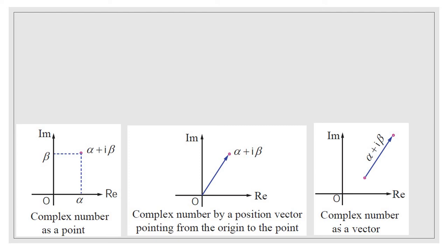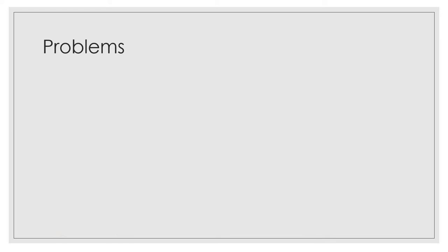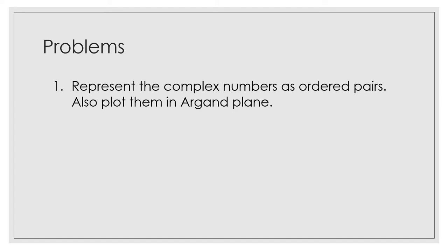So there are a lot of representations of complex numbers. Represent the complex numbers as ordered pairs and also plot them in the argand plane. Two representations we have studied: one by representing in ordered pairs, and the next one representing in the argand plane. For 3 plus i, how do we represent this in an ordered pair? The real part is 3 and the imaginary part is 1.